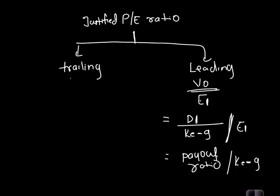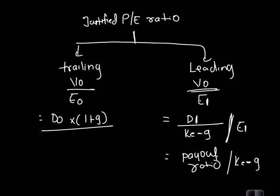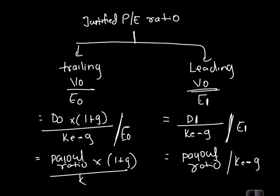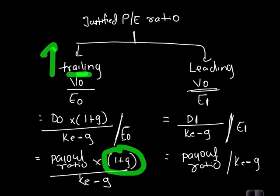The justified trailing price-to-earnings multiple is V0 divided by E0. Writing V0 as D0 × (1 + G) / (Ke − G) and dividing by E0 gives (D0/E0) × (1 + G) / (Ke − G), which is payout ratio × (1 + G) / (Ke − G). The trailing PE is higher than the leading PE by a factor of (1 + G).